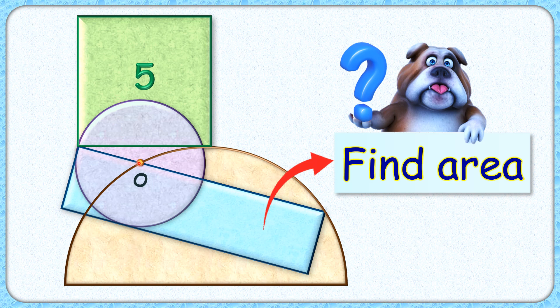The center of the circle lies on the circumference of the semicircle. The exciting part is with this limited data we have to find the area of this blue rectangle.